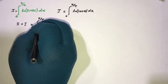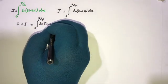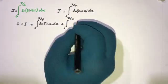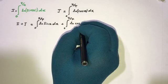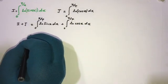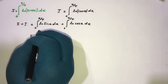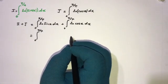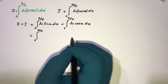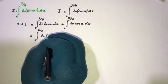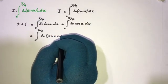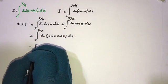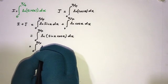I plus J equals the integral from 0 to π/4 of ln(sin x) dx plus the integral from 0 to π/4 of ln(cos x) dx. Since the limits are the same, we can write this as a single integral from 0 to π/4 of ln(sin x) plus ln(cos x) dx. By the property of natural log, this becomes ln(sin x · cos x).